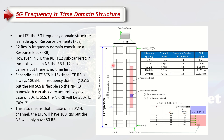In LTE the subcarrier spacing is 15 kHz, while in 5G we have different subcarrier spacings based on numerology, referred to by the parameter mu. When mu equals 0 we use 15 kHz — the same as LTE. When mu equals 1 we use 30 kHz, and when mu equals 2 we use 60 kHz, and so on. This flexibility in subcarrier spacing was not present in LTE.